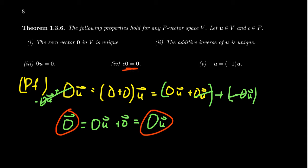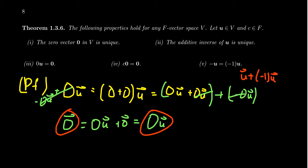Property four says that any scalar multiple of the zero vector gives back the zero vector. This is left as an exercise, but it's very similar to the proof we just did. Property five states that the additive inverse of a vector is just that vector multiplied by negative one. The proof is also similar: take u plus negative one times u, use the distributive property, show this equals the zero vector, and since inverses are unique, it must equal negative u.